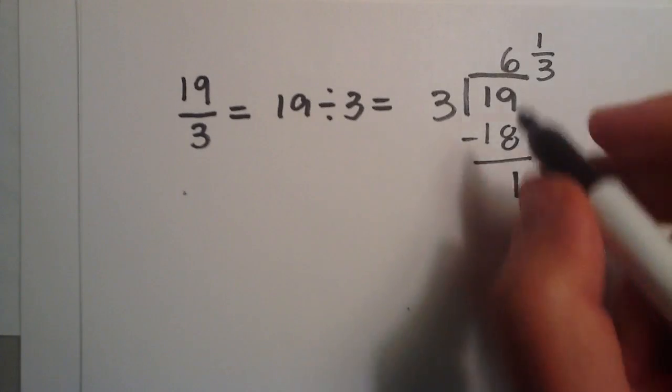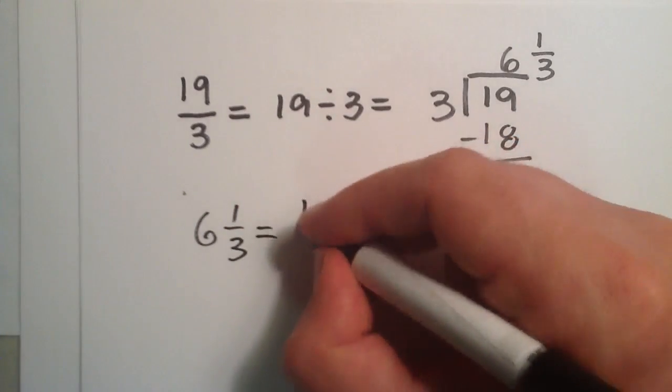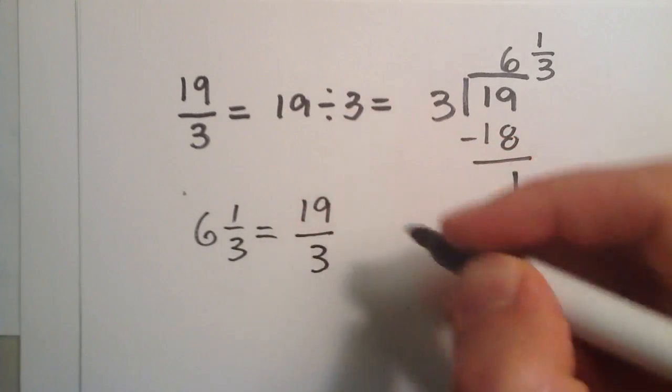We only have 1. So 6 and 1 third is a mixed fraction, which is equal to 19 over 3.